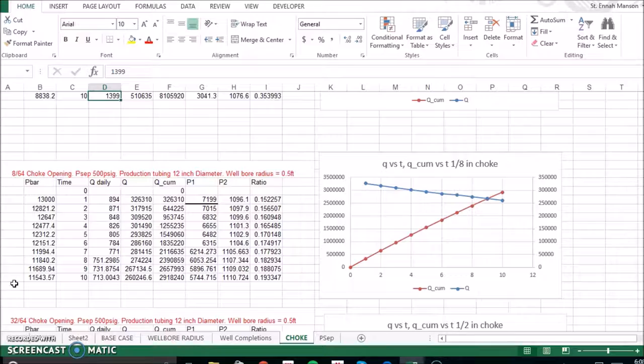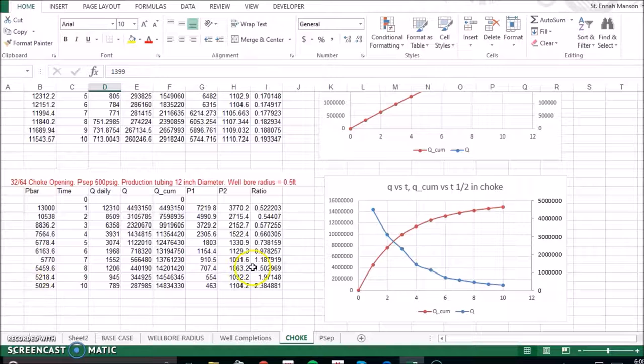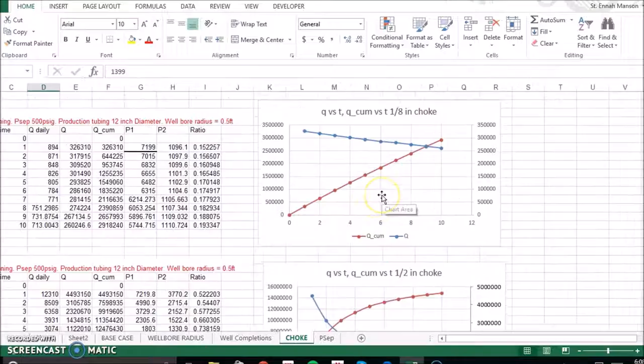And when we increased our choke opening to a half an inch, our production increased, but it hit subcritical flow at year five. And by year seven, it was physically impossible for it to flow because P1 was less than P2, when in fact we needed P2 to be less than P1.